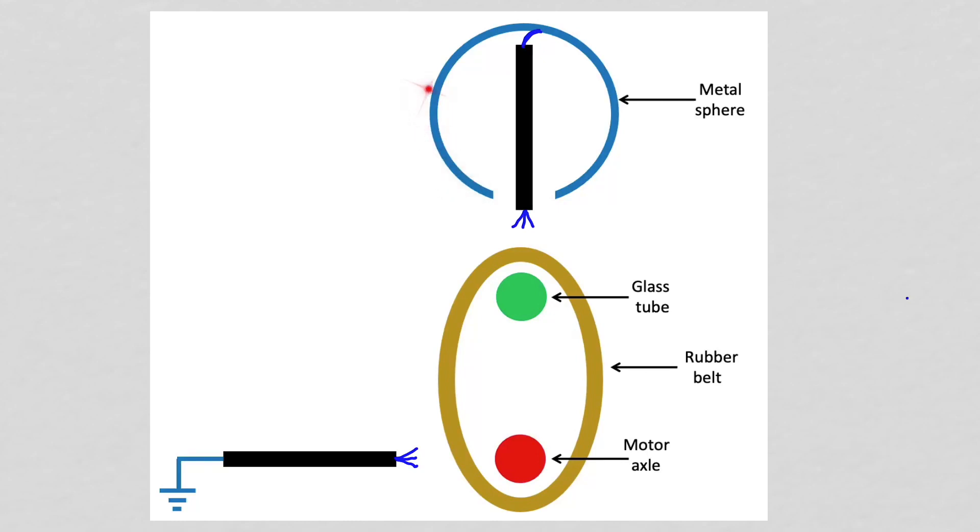The Van de Graaff generator consists of our metal top, and inside there's an electrical connection to it via a wire. Here we have a rubber belt that's being turned on an axle, so there's actually contact between the axle and the rubber belt, and a glass tube that's also making contact with the rubber belt. The wire that's attached to the inside of our metal sphere comes close but does not touch the rubber belt. There is another wire attached to ground that also comes close but does not touch the rubber belt. As the motor axle rotates, it will cause the rubber belt to rotate, and the rubber belt rotating will cause the glass tube to rotate.